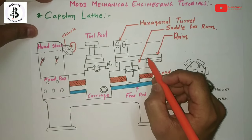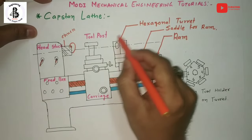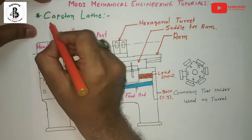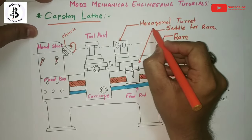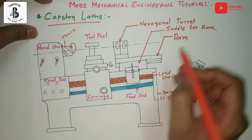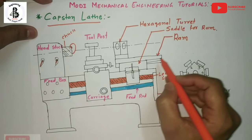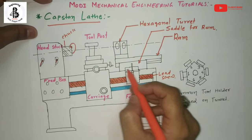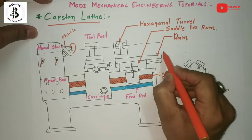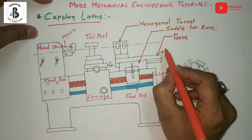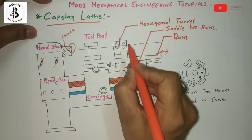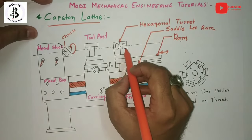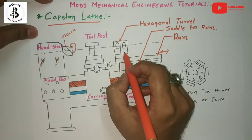The key difference between the engine lathe and capstan lathe is the hexagonal turret. In the engine lathe there is a tailstock on the other side, but in the capstan lathe the tailstock is replaced by the hexagonal turret. The hexagonal turret is situated on the saddle for the ram, and the ram sits on the bed. According to the required size and shape of the job, this ram reciprocates on the bed and is connected with the saddle, allowing cross slide movement adjustment.